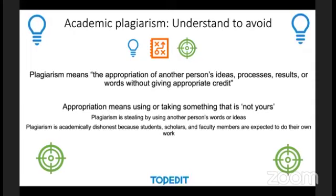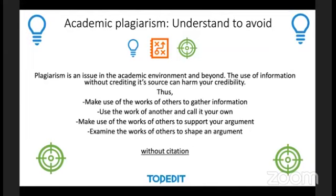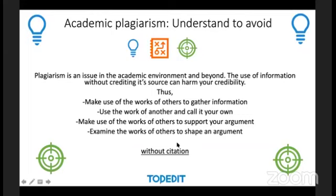What is plagiarism? This means the appropriation of another person's ideas, processes, results, or words without giving appropriate credit. It is academically dishonest — everyone is expected to do their own work. Plagiarism is a big issue in the academic environment. The use of information without crediting its source can harm your academic credibility. If you use the work of others to support your argument, you must cite the source.